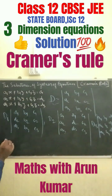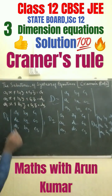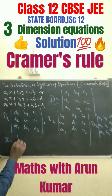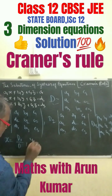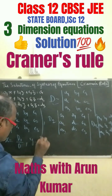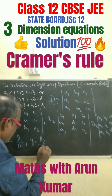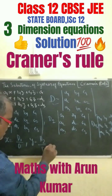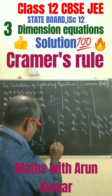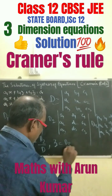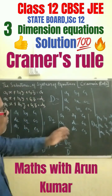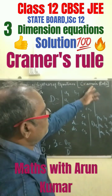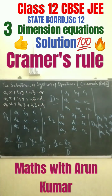Now, to find out the values: x equals D1 divided by D, y equals D2 divided by D, and z equals D3 divided by D. This is what Cramer's rule states. Thank you.